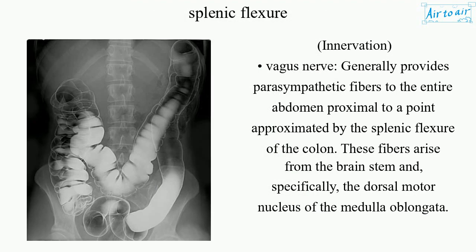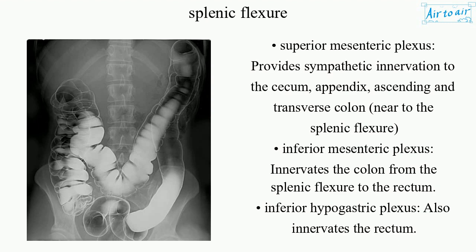Innervation: the vagus nerve generally provides parasympathetic fibers to the entire abdomen proximal to a point approximated by the splenic flexure of the colon. These fibers arise from the brain stem and specifically the dorsal motor nucleus of the medulla oblongata. The superior mesenteric plexus provides sympathetic innervation to the cecum, appendix, ascending and transverse colon near to the splenic flexure. The inferior mesenteric plexus innervates the colon from the splenic flexure to the rectum.